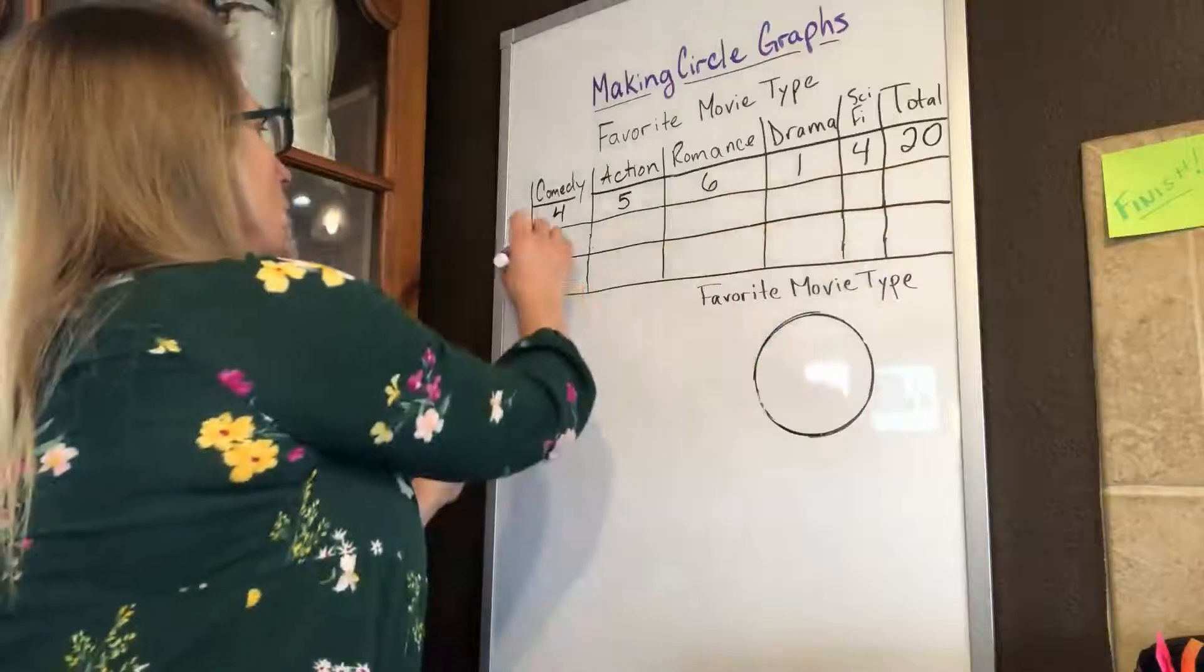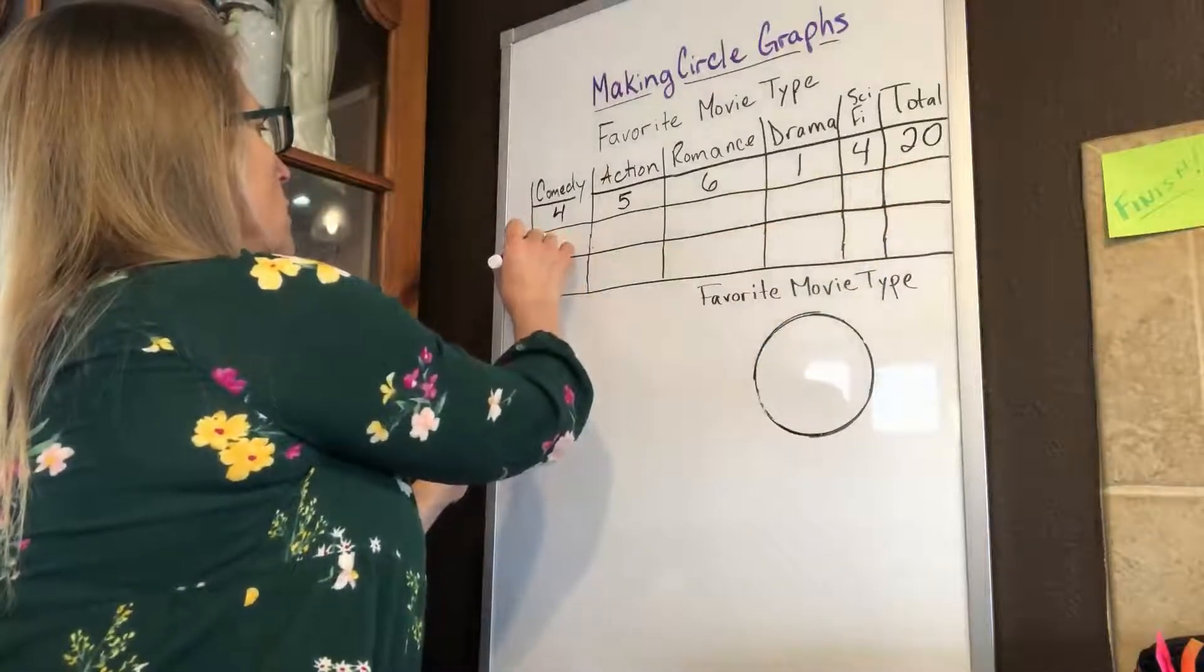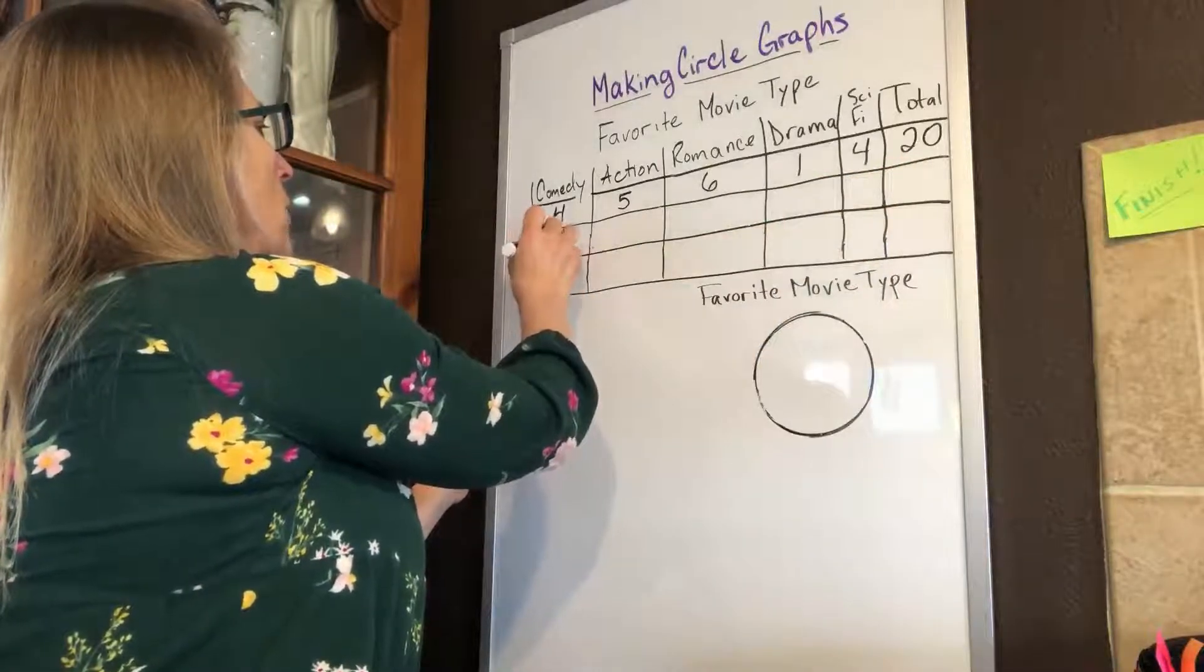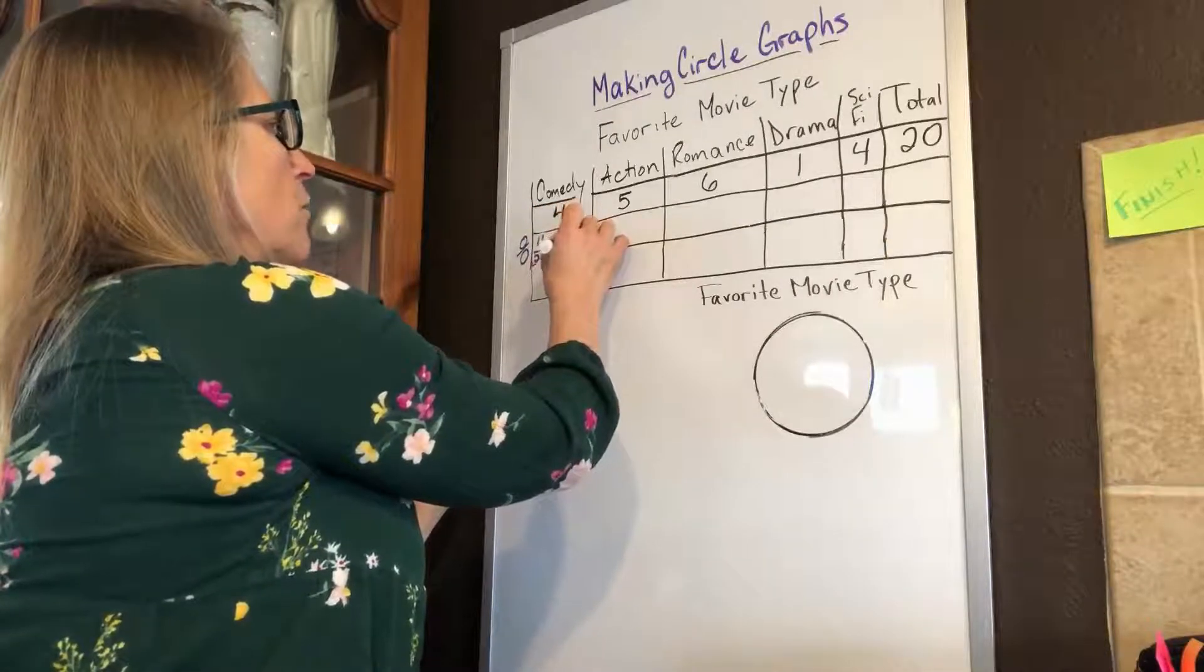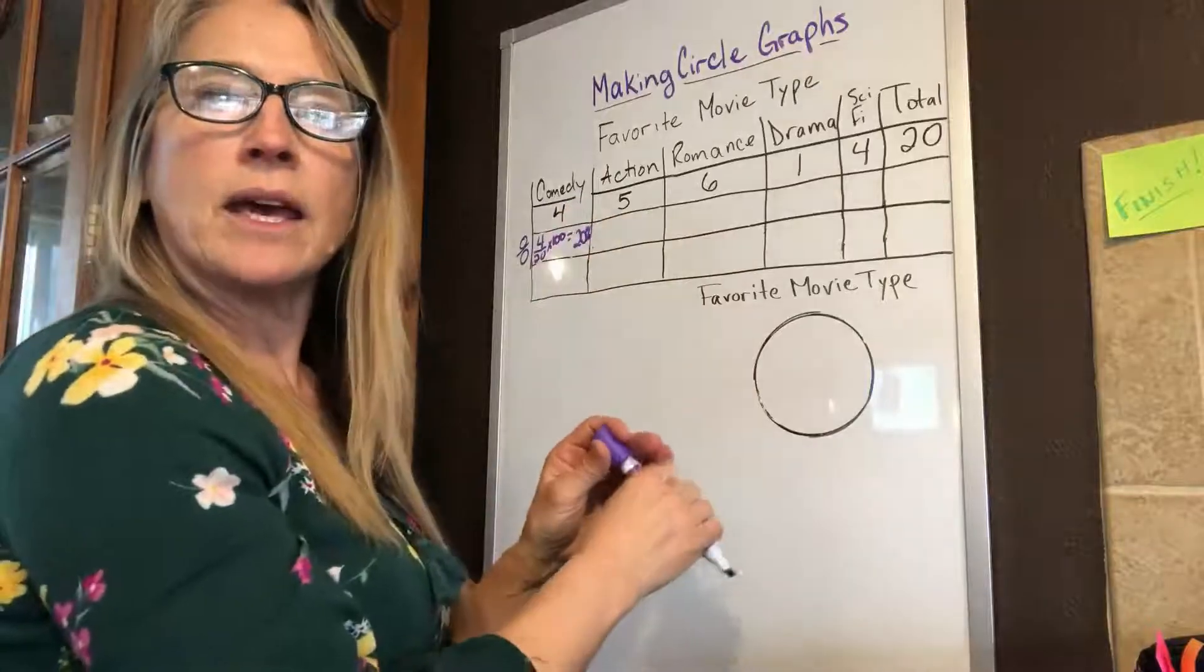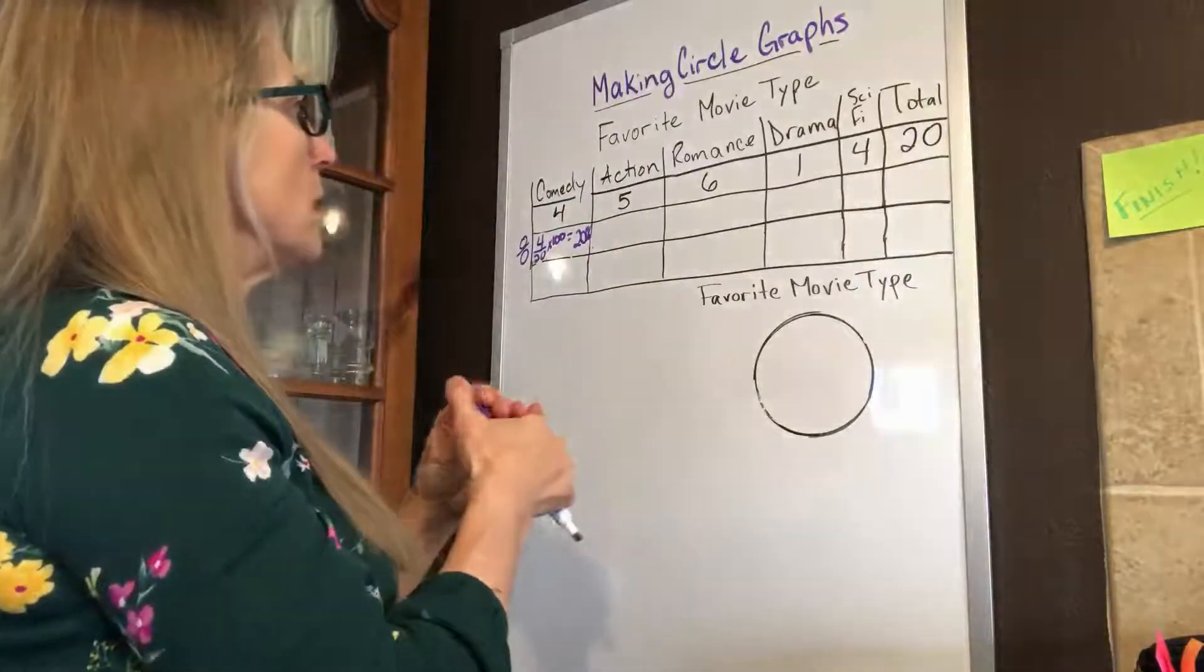To do that, I would take four, divide it by 20, and multiply by 100. You should know how to do this. That's going to be 20% when I do that calculation. Then I'm going to do the same thing with each of these.